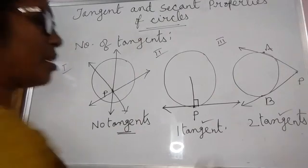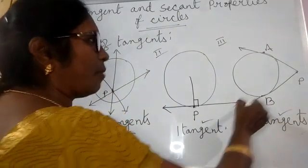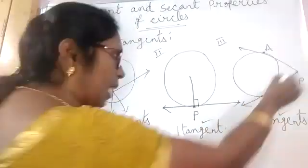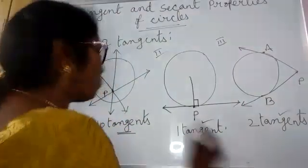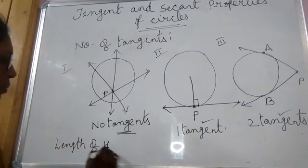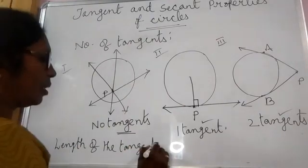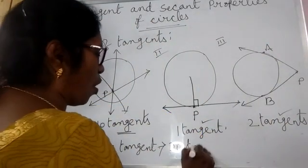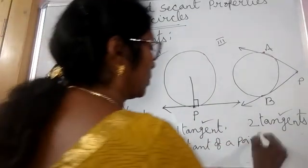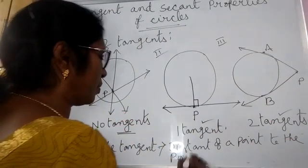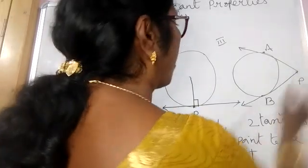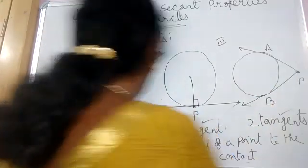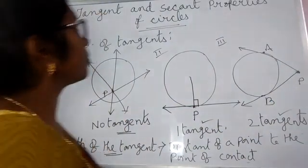The length of a tangent means the distance from the external point to the point of contact. From external point P, the distance to the point of contact B is PB, and similarly PA — these are said to be the lengths of the tangents.